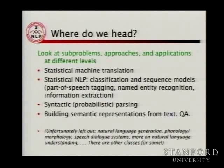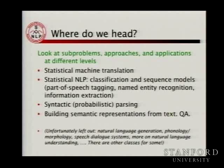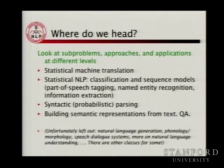In the rest of this course, we'll look at different NLP problems and how to approach them. We'll start with machine translation and statistical MT, using it as a backdrop for introducing language models, estimation, and smoothing. We'll then cover sequence models for information extraction and part-of-speech tagging, natural language parsing with context-free grammars and their probabilistic equivalents, and then semantic interpretations and particular applications.